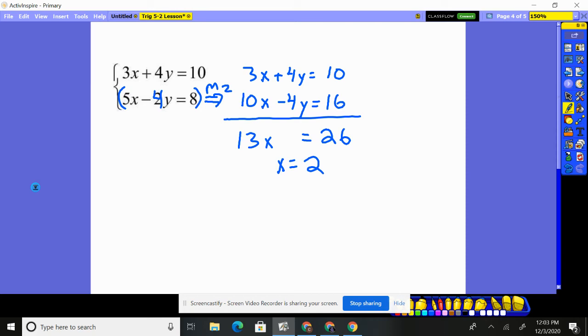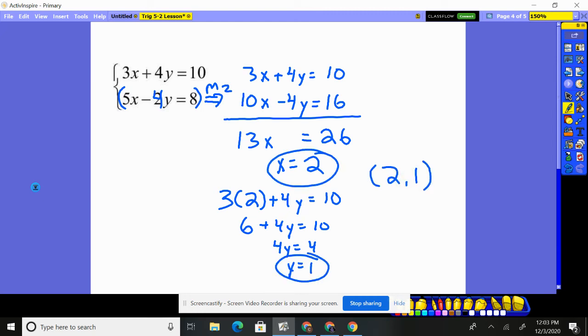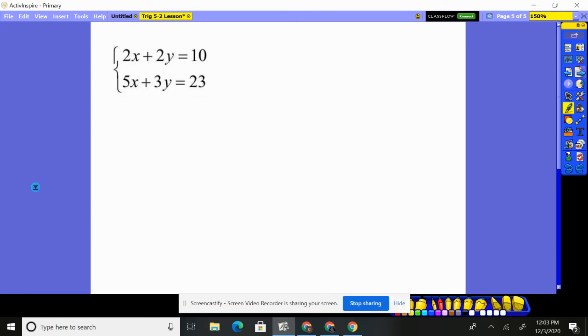Go back to, I'm going to go back to the top one. You can go back to either one, but the top one looks easiest. 6 plus 4y is 10. Subtract 6. And you're going to get y is 1. So, here are two solutions. Technically, they're crossing at the ordered pair 2 comma 1. Okay, that looks pretty good.